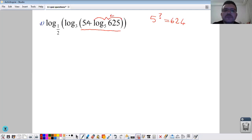So 5 plus 4 will be the result of this part. Then we have log base 1/2 of log base 3. Inside the parentheses, 5 plus 4 makes 9.